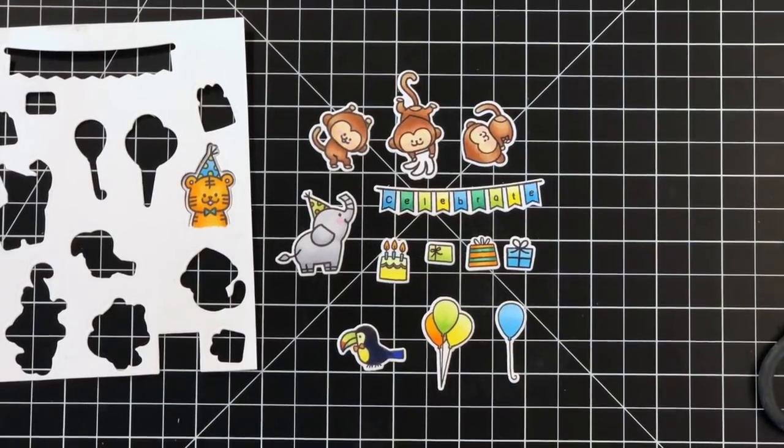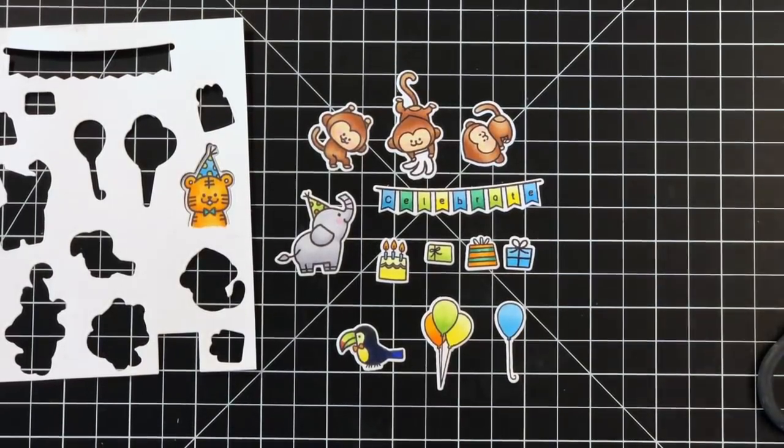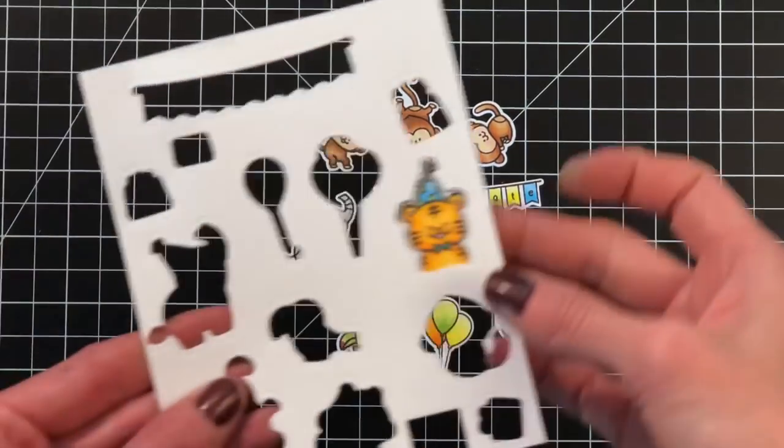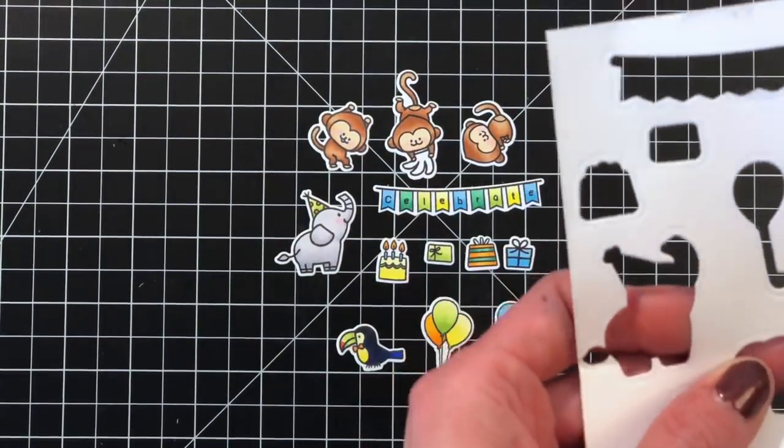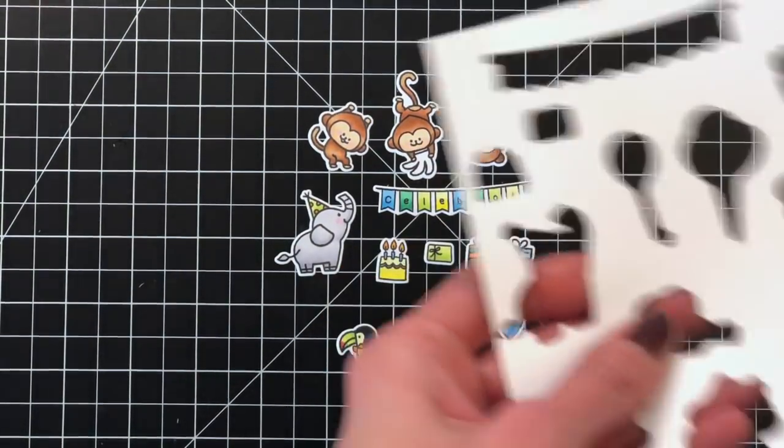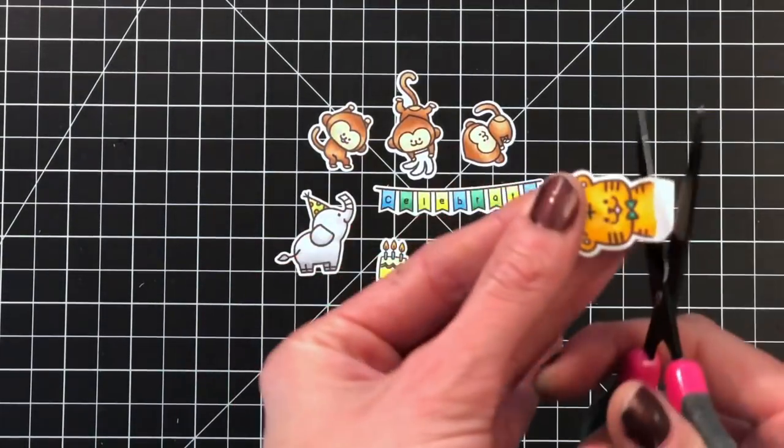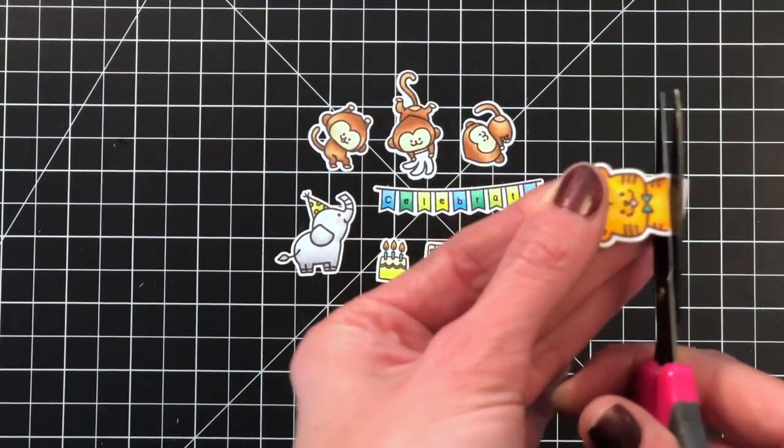So I already went ahead and stamped and Copic colored as well as die cut. I'm going to cut all these images out. Several of these images are from the Jungle Birthday stamp set, and a few of them are from the limo ride, mainly the balloons and the presents and the cake are from the limo ride except for one present, that blue present.